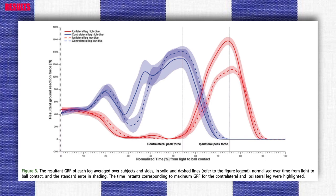Peak resultant ground reaction forces was larger for the ipsilateral leg than for the contralateral leg in high dives, but the opposite was true in low dives.